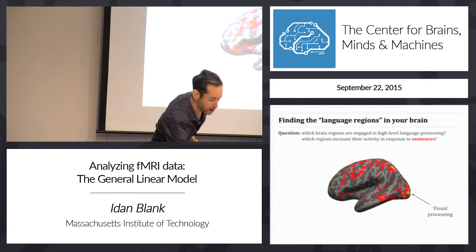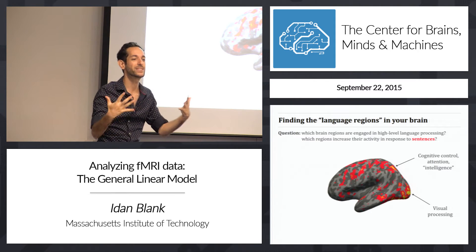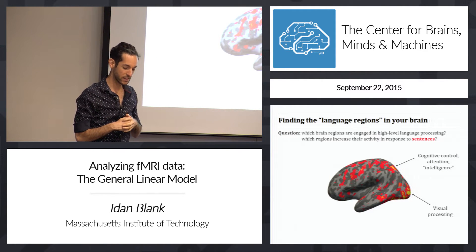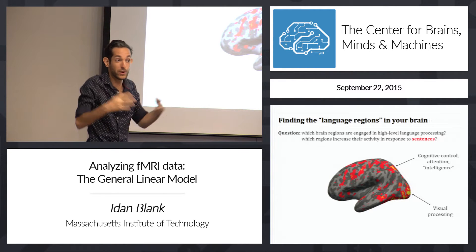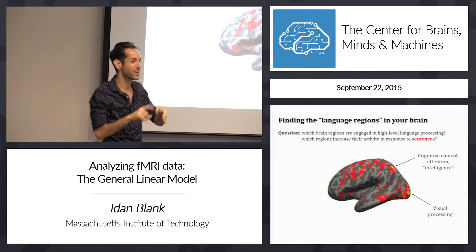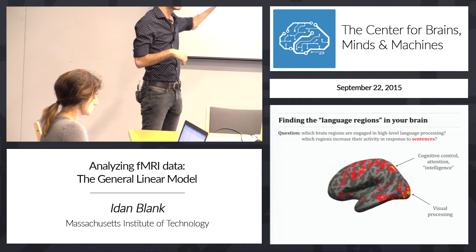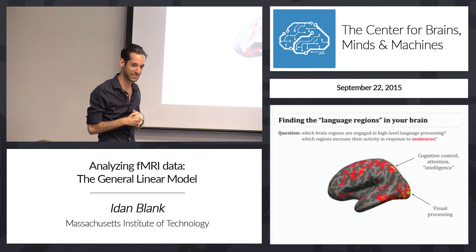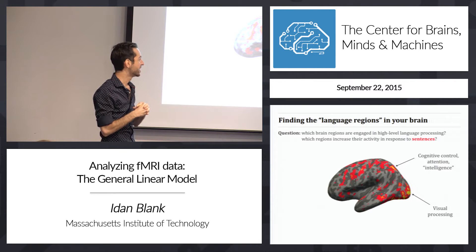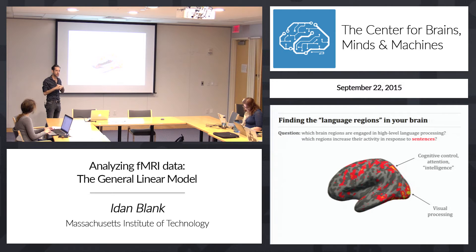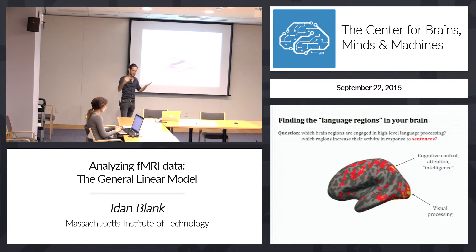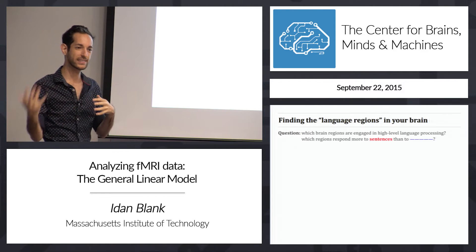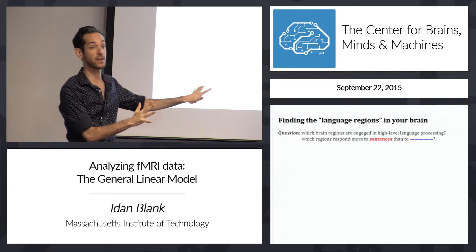We also get other regions that are active just because there is some task — regions from what we call the cognitive control system or attention system, somehow involved with fluid intelligence. Whenever you're trying to solve a task, whether reading, doing arithmetic, or playing a memory game, these regions activate too. They're not part of your language system. This is the problem with just asking what regions increase activity in response to sentences — it's not a very good question. With fMRI, meaningful questions compare two conditions.